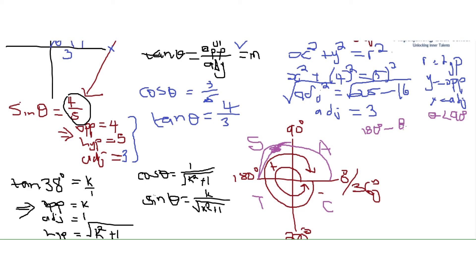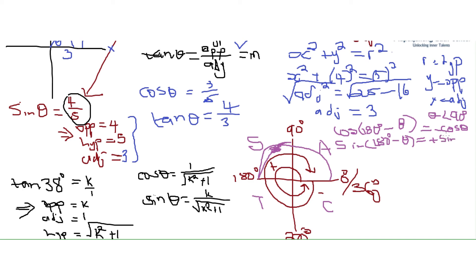So cos(180° − θ): the bracket tells us it's in the second quadrant, and cos in the second quadrant is negative, so this becomes negative cos theta. For sin(180° − θ): we go to 180 and then backwards, landing in the second quadrant, and sine in the second quadrant is positive, so it becomes positive sine theta. We drop the 180 degrees — this is what they call reduction formulas.